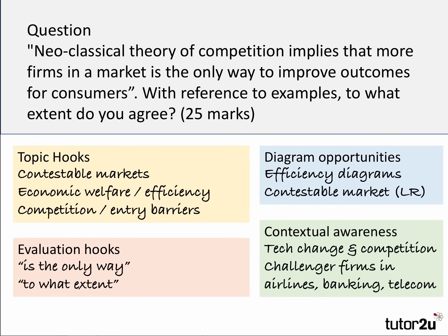Every question in the exam has certain key topic hooks. They may not necessarily be mentioned directly in the question, but this one's clearly about contestable markets, it's about economic welfare and efficiency, it's about different forms of market competition and the significance, for example, of entry barriers in the market. Lots of opportunity for diagrams, and we'll look at a couple of them with this answer. Crucially, there's the chance to show your contextual awareness — it does say 'with reference to examples.'